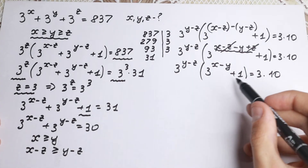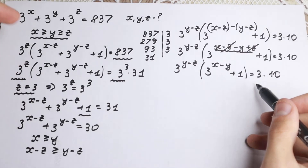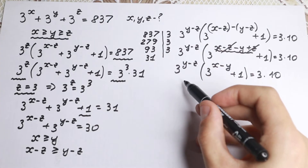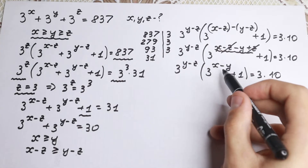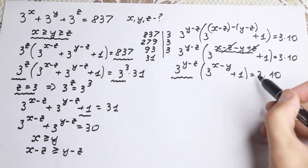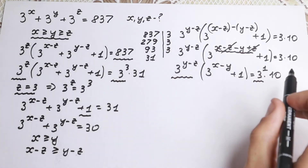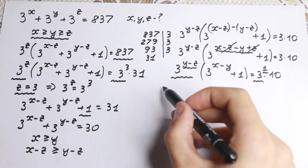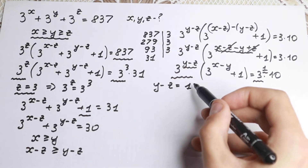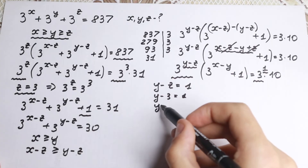After this factoring step we have the same structure as before: a power of 3 times a parenthetical expression equals a product. Comparing both sides, the one and only case this equation works is when the power y minus z equals 1. Since z equals 3, we have y minus 3 equals 1, so y equals 4.